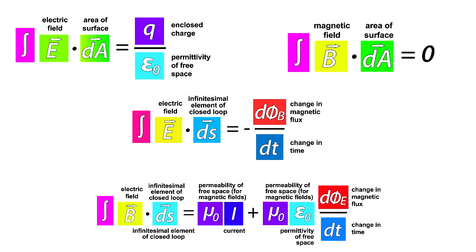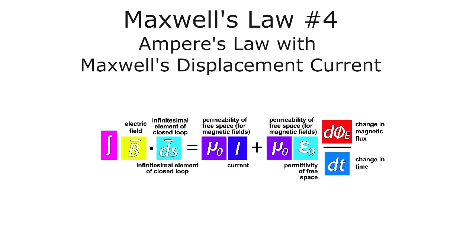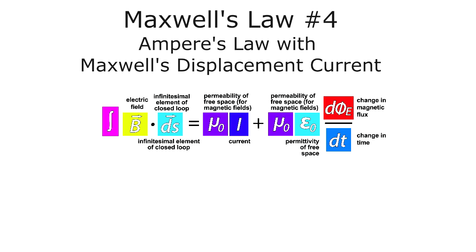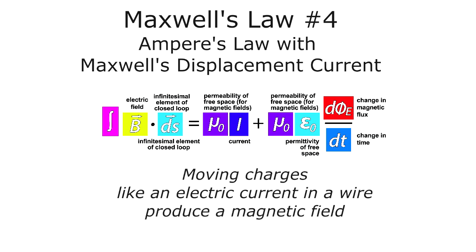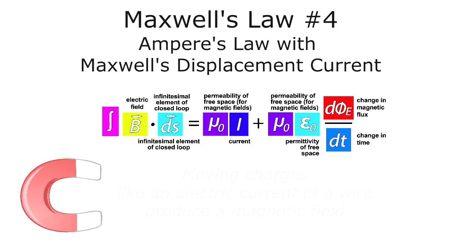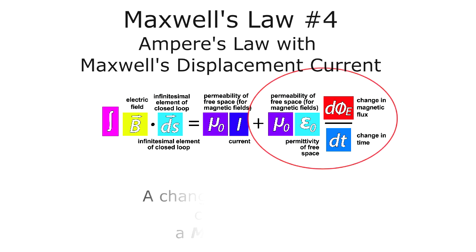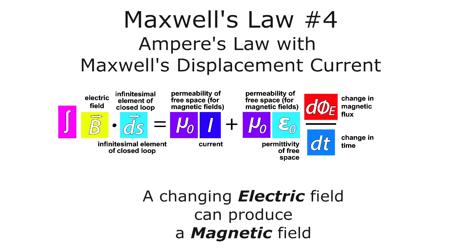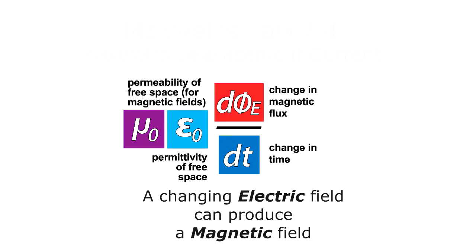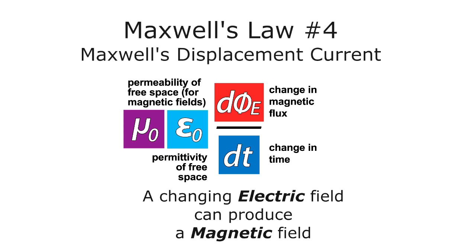Maxwell's fourth and final equation is Ampere's Law with Maxwell's Displacement Current, which says that moving charges like an electric current in a wire produce a magnetic field. This includes permanent magnets, which are also a result of moving charges at the atomic level. In addition to moving charges, a changing electric field can also produce a magnetic field, and this is called Maxwell's Displacement Current.